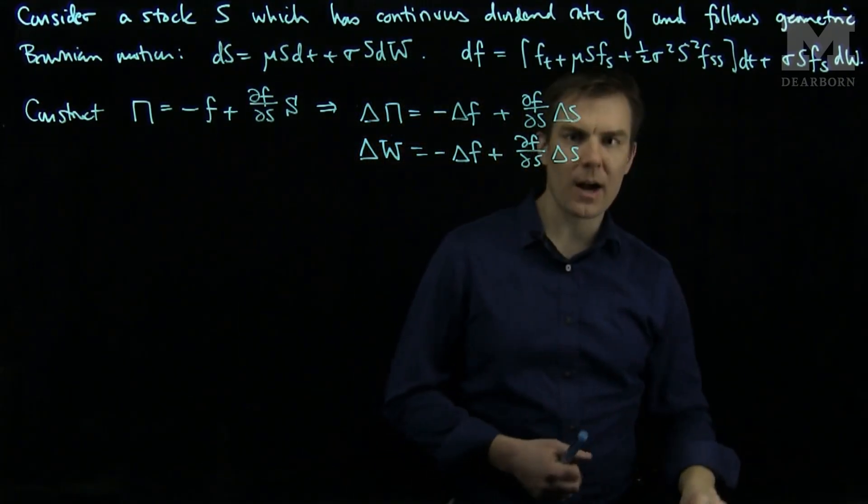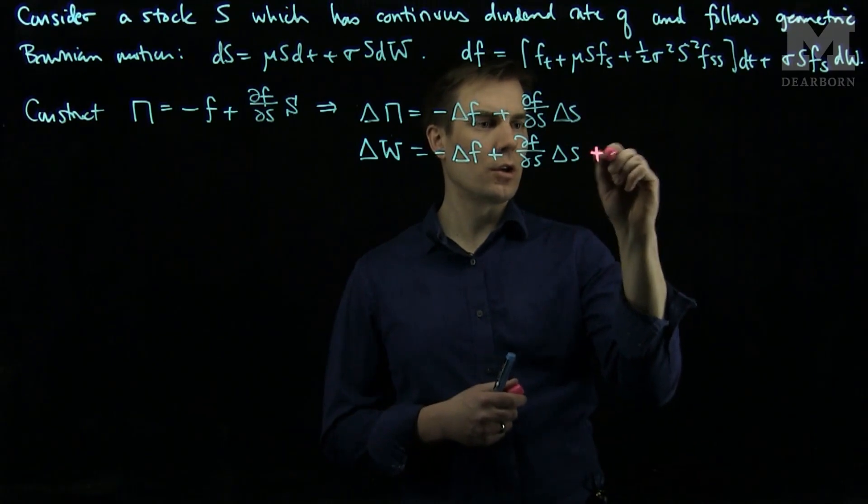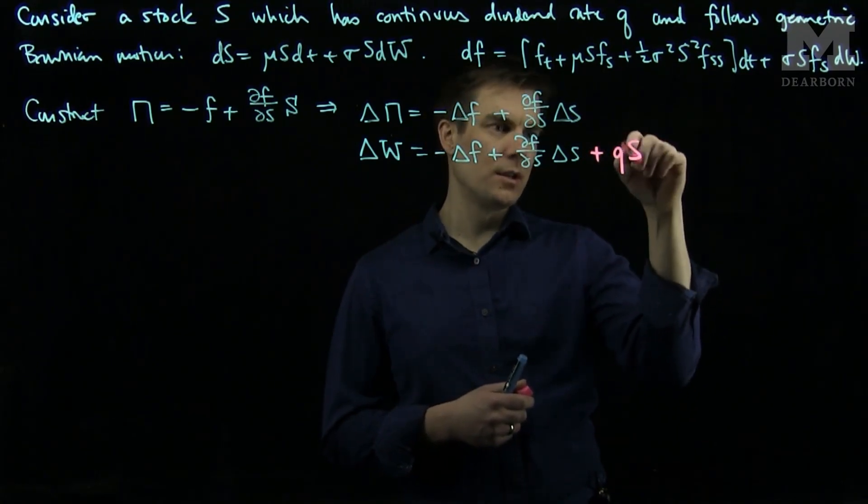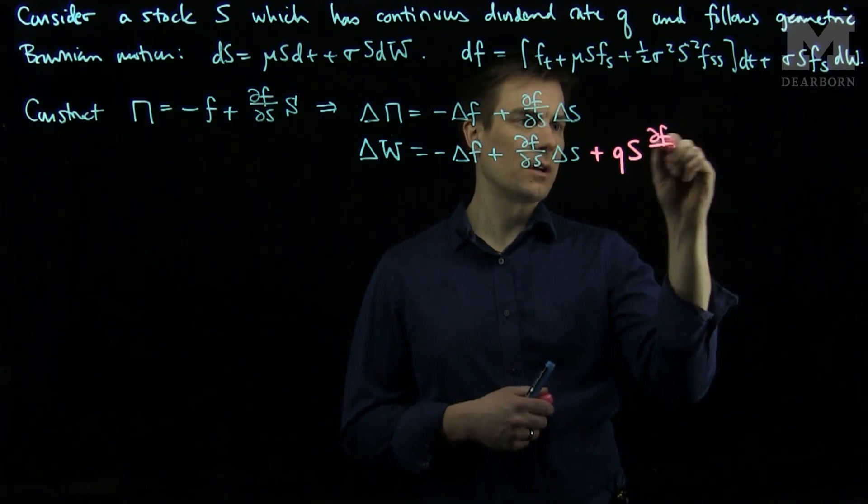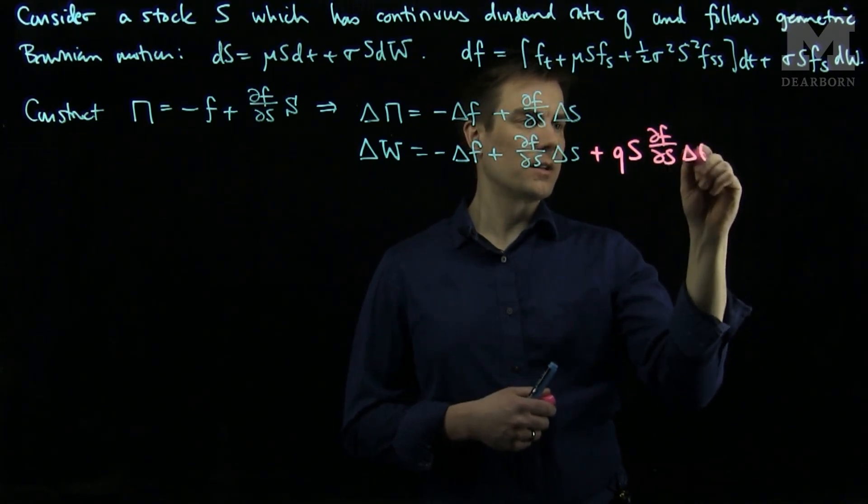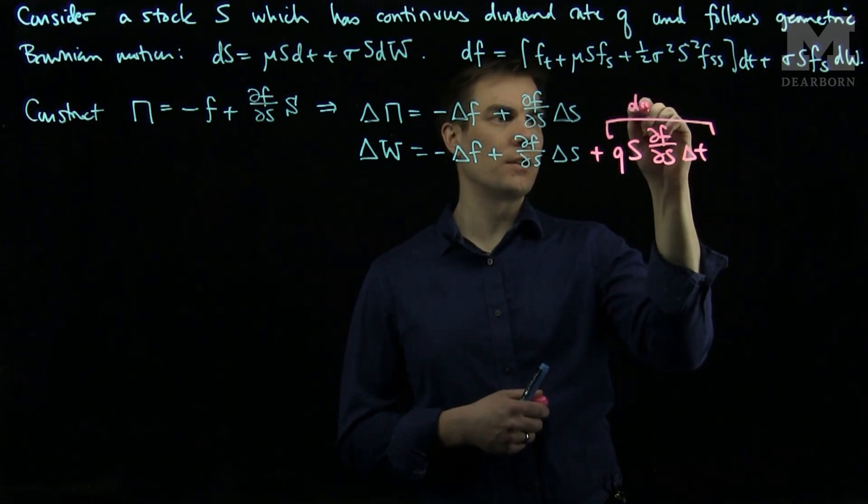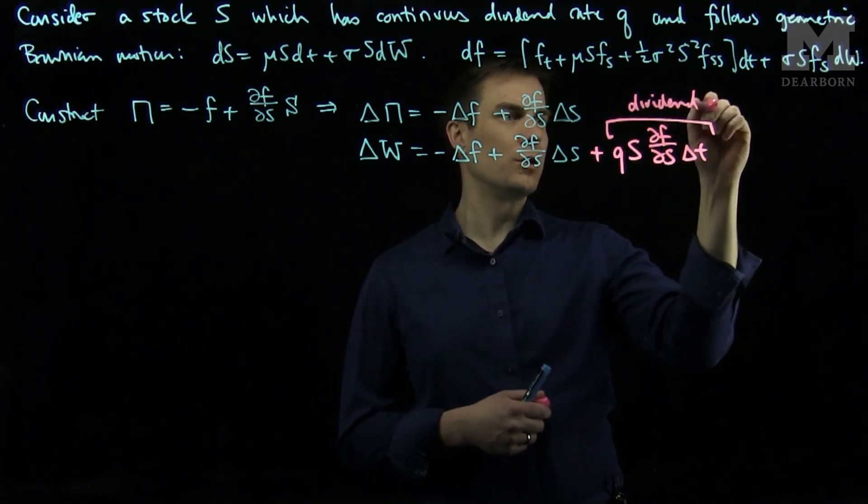And then I will have QS, the dividend rate, times the total number of derivatives delta t. So this expression over here is the dividend distribution.